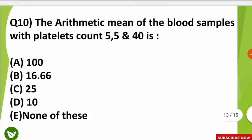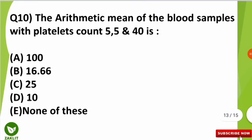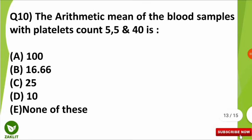The tenth question is: the arithmetic mean of the blood samples with the platelet counts of 5, 5, and 40 is how much? This is from the biostatistics part — a very simple question.